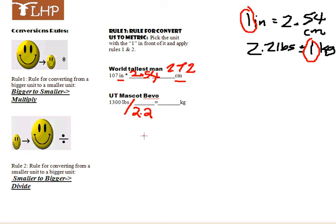So when we divide 1,300 by 2.2, we get about 590.9 kilograms. So Bevo is not small by any means. So check your calculator on that one.